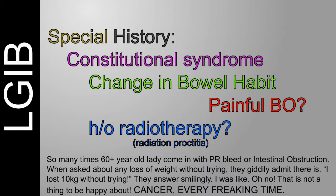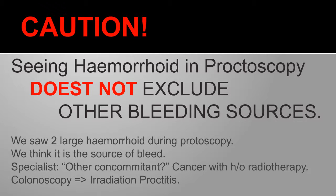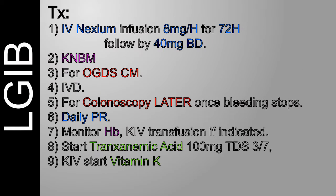Ask history directed to these causes: constitutional symptoms, changing bowel habit, is it painful during the bleed, and for radiation — any history of radiotherapy? On examination, PR the patient and do a proctoscopy to look for haemorrhoids. Caution though — even if haemorrhoids are seen, it may not be the smoking gun. I've had a patient with two huge haemorrhoids; we all thought that was the cause of the bleed, but the specialist found radiation proctitis.